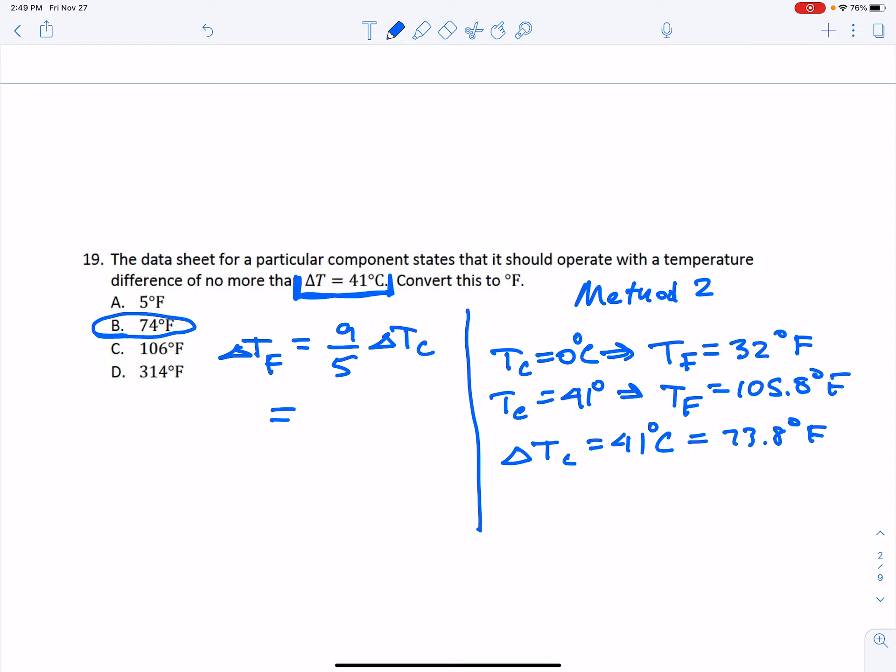Another method you could use is you could choose any two temperatures that have a 41 degree difference. Choose any two temperatures that have a 41 degree difference. An easy one would be choose the first temperature to be zero degrees, and we know that converts to 32 degrees Fahrenheit. Then we could convert the 41 to Fahrenheit and we get 105.8. So if you missed the problem, the mistake you made was you didn't use the fact that this is a temperature difference. So then if you just subtract the 105.8 minus 32, you get the 73.8.